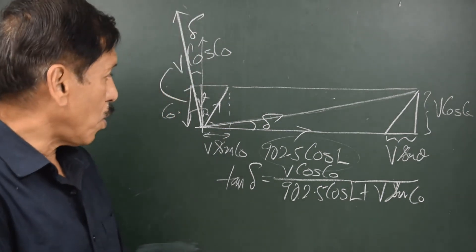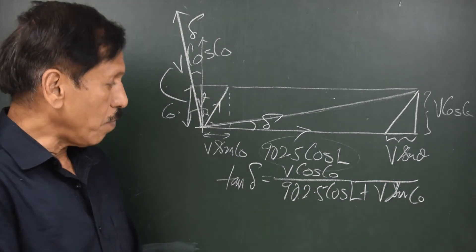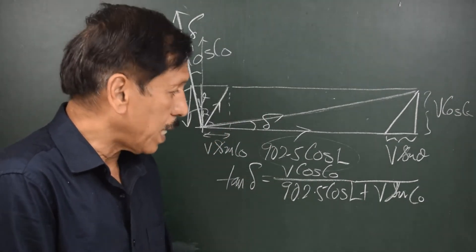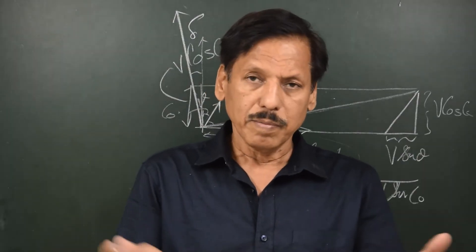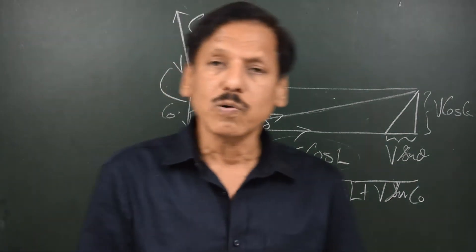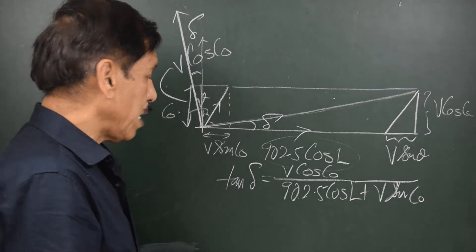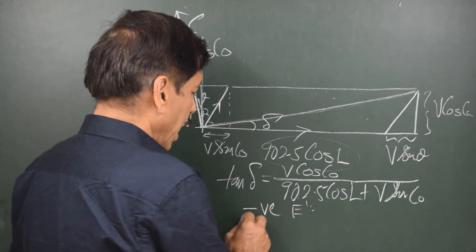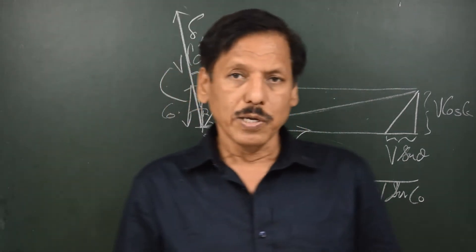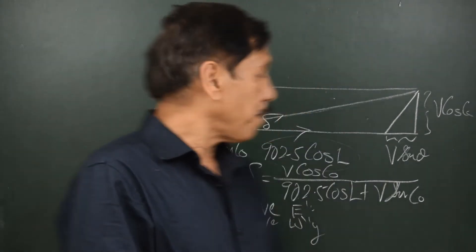We can apply this formula for all courses in all quadrants by entering course in three-digit format, keeping the denominator always positive. The sign of delta tells us the direction: on all northerly courses the north-south speed error is westerly, and on all southerly courses the north-south speed error is easterly.